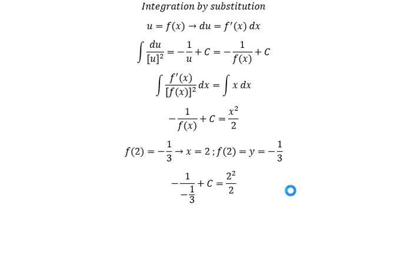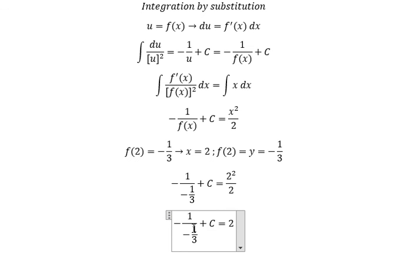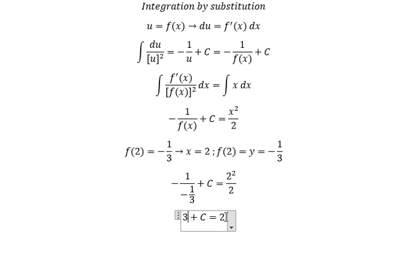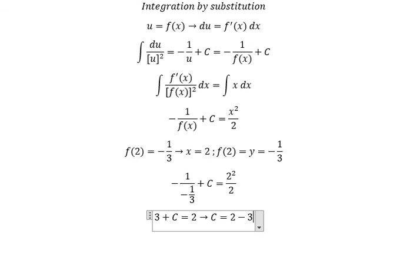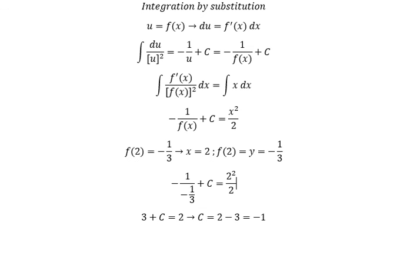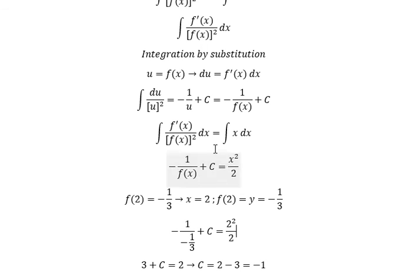We need to simplify. Two squared over two gives us two. The negative negative gives positive, and one divided by one-third gives positive three. So we have c equals two minus three, which gives c equals negative one. Now we return back to our equation.